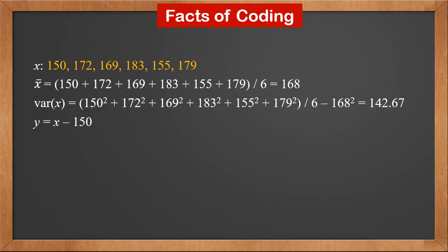Now y is x minus 150. And these are all y values. Y bar is the sum of all y's, divided by 6, which is 18. We can see that y bar is x bar minus 150.